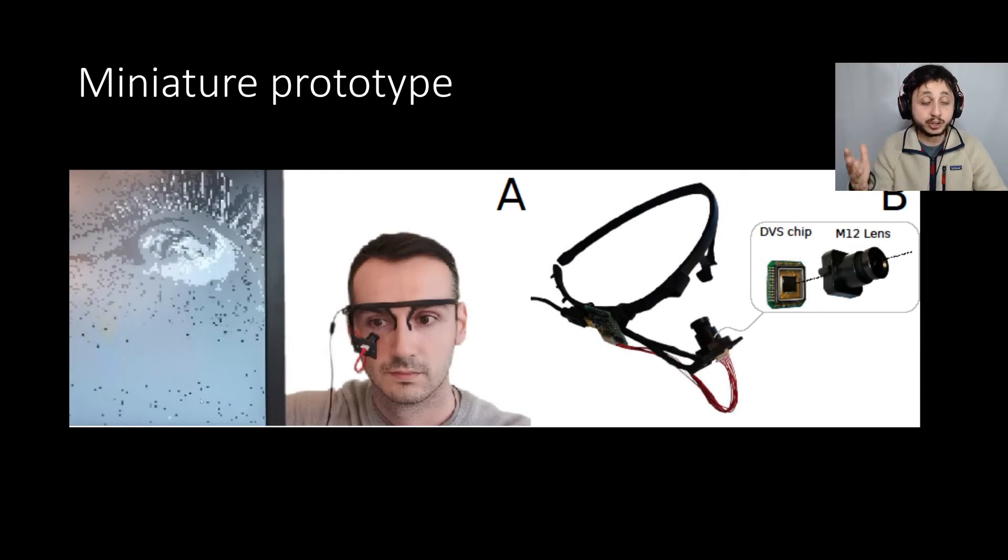Finally, we built a miniature prototype of this system. So we 3D printed a harness that's shown on the right-hand side of this plot. And then we put an event-based camera in it, and you can see Julian's there in panel A. And where imaging is high, and you can see it moving on the left-hand side.